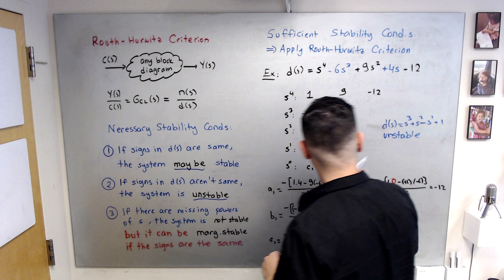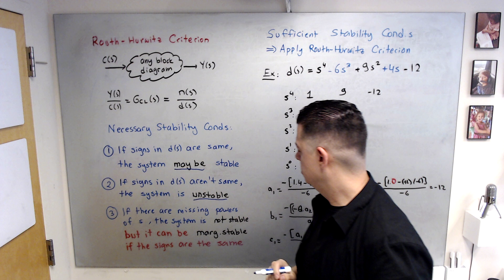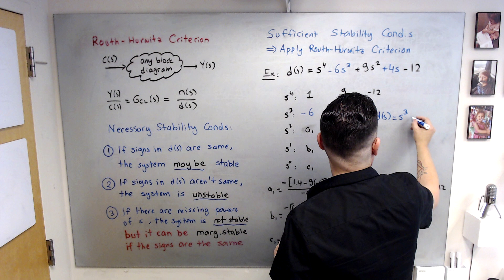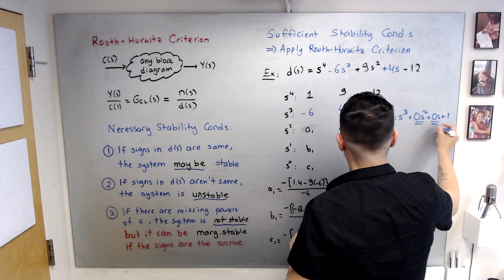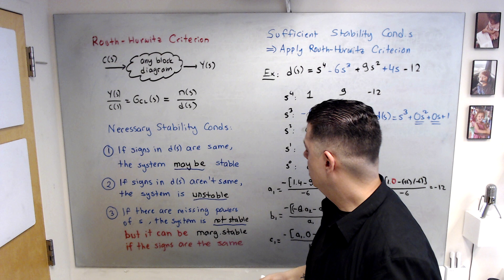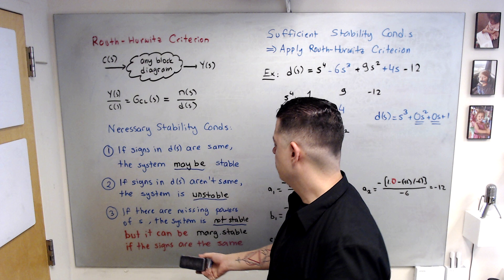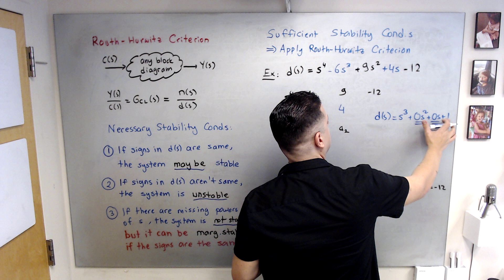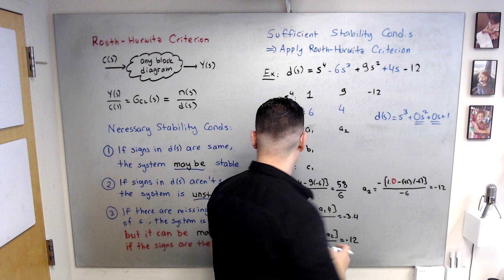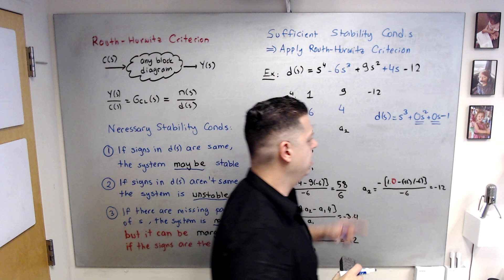The third condition: if there are missing powers of s, the system is not stable. For example, let's say d(s) is s³ + 0·s² + 0·s + 1 — two missing powers. 'Not stable' means it can be unstable, but it can also be marginally stable. For marginal stability, if the signs of the remaining terms are the same — like plus, plus with two missing powers — then the system may be marginally stable. But if the signs of the remaining terms are not the same, the system is clearly unstable.